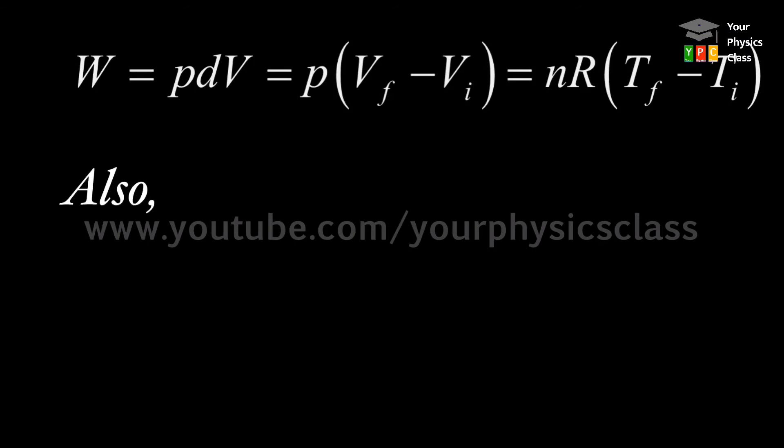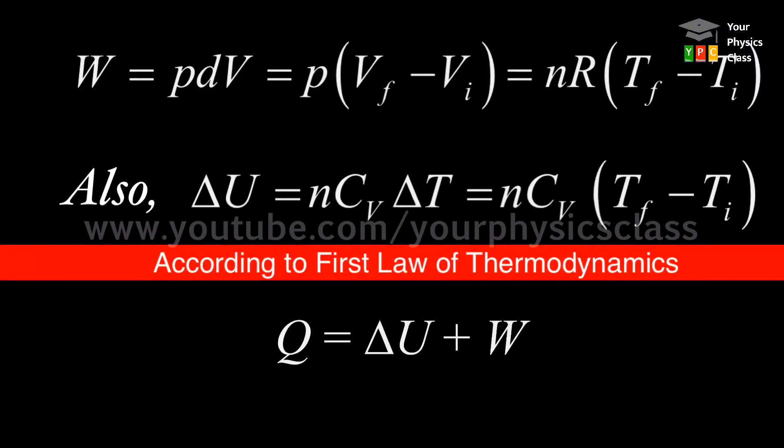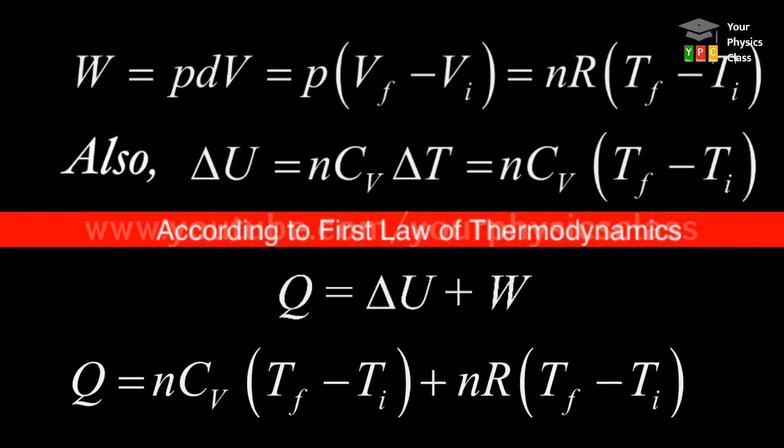Also, the change in internal energy of the system at constant volume is given by delta U equals n times Cv delta T. Now, in accordance with first law of thermodynamics, we may write Q equals nCv times change in temperature plus nR times change in temperature.